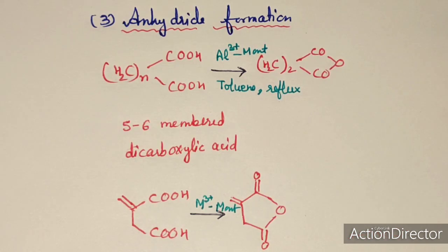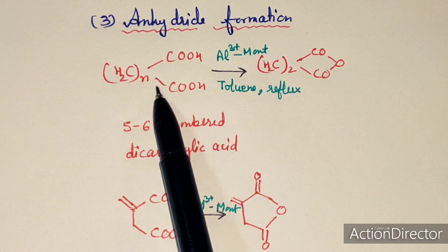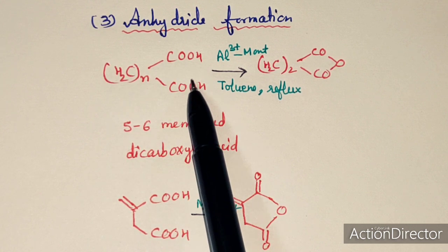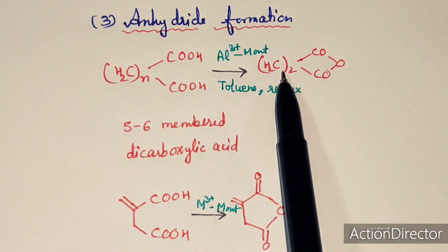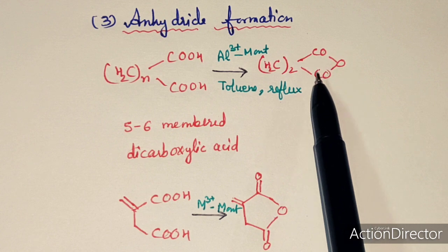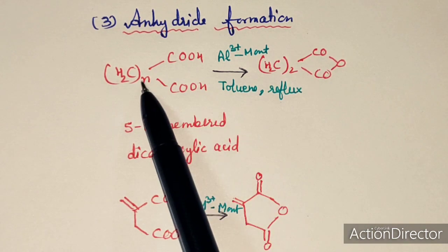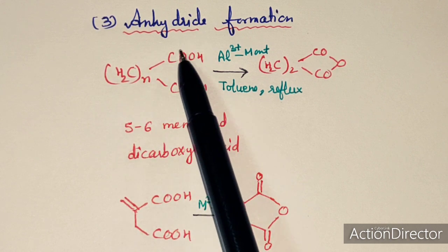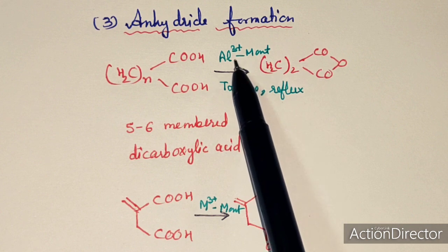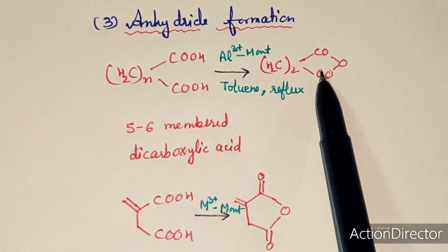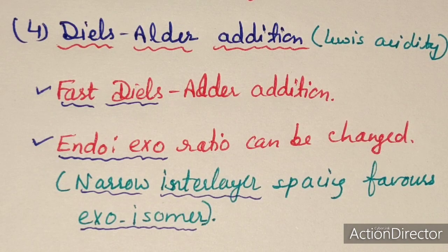The third type of reaction is anhydride formation — another dehydrating reaction that occurs in the presence of montmorillonite clay. Cyclic anhydrides can be formed from five- or six-carbon dicarboxylic acids (where n = 3 or 4). Dehydration of the dicarboxylic acid in the presence of montmorillonite clay in a solvent like toluene yields the anhydride.